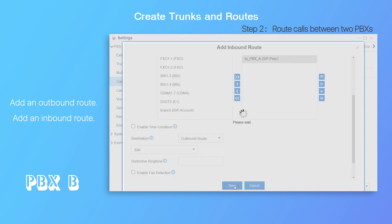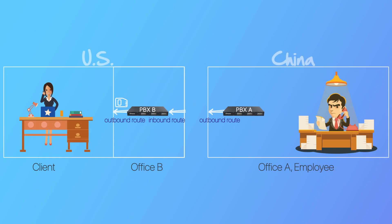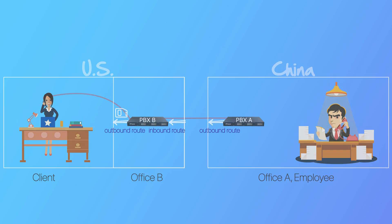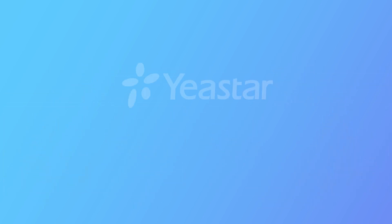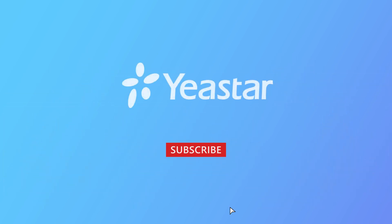Now let's make a call from PBX A to test the connection. The outgoing call to the US will be established via the SIM card in Office B, and of course, we saved our cost. Alright, hope you guys enjoyed this video. Subscribe if you're not already — I'll see you guys in the next one.